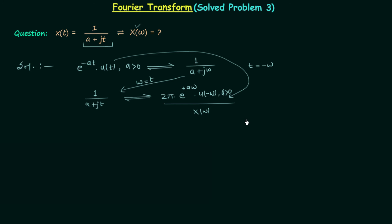So in this way you can use the property of duality to calculate the Fourier transform quickly, but for that you need to remember some basic Fourier transforms like this one. So this is all for the question and now we will move to the homework problem.